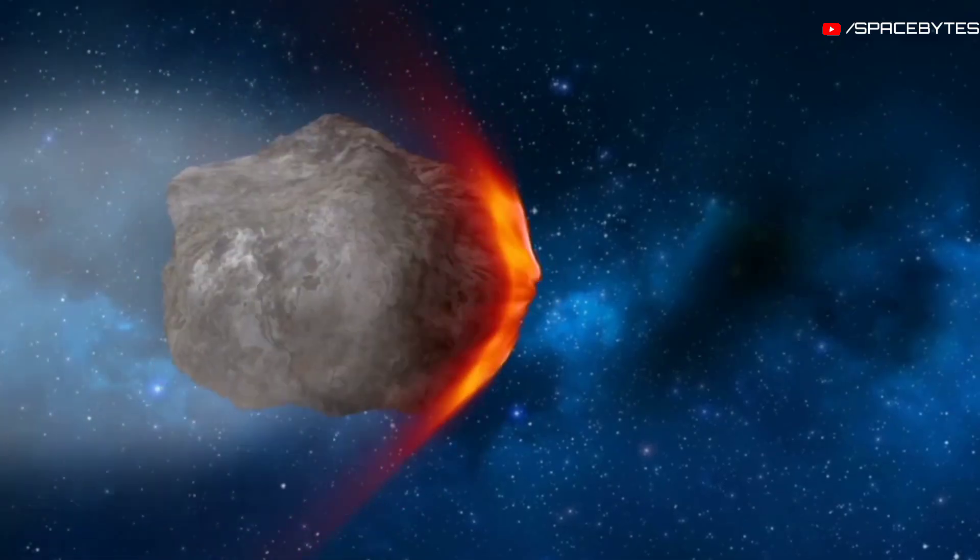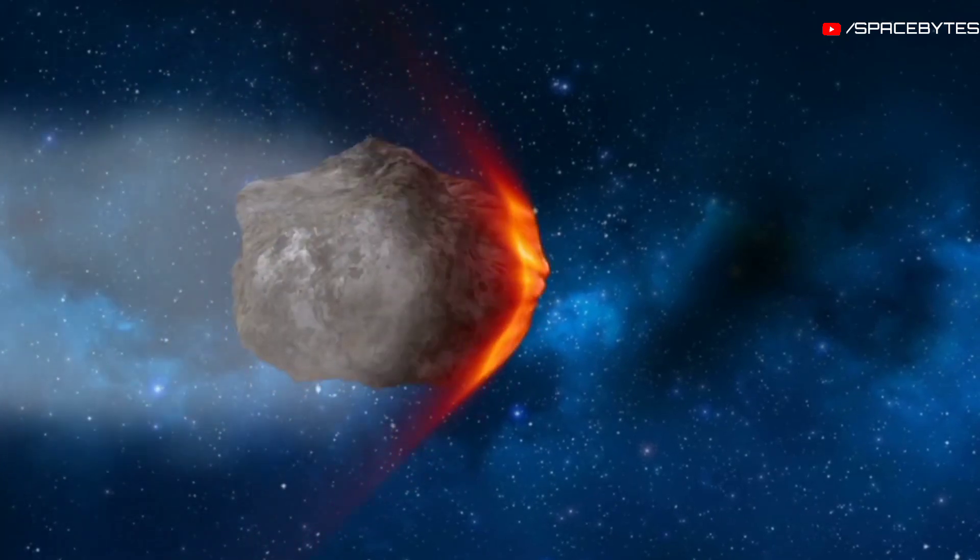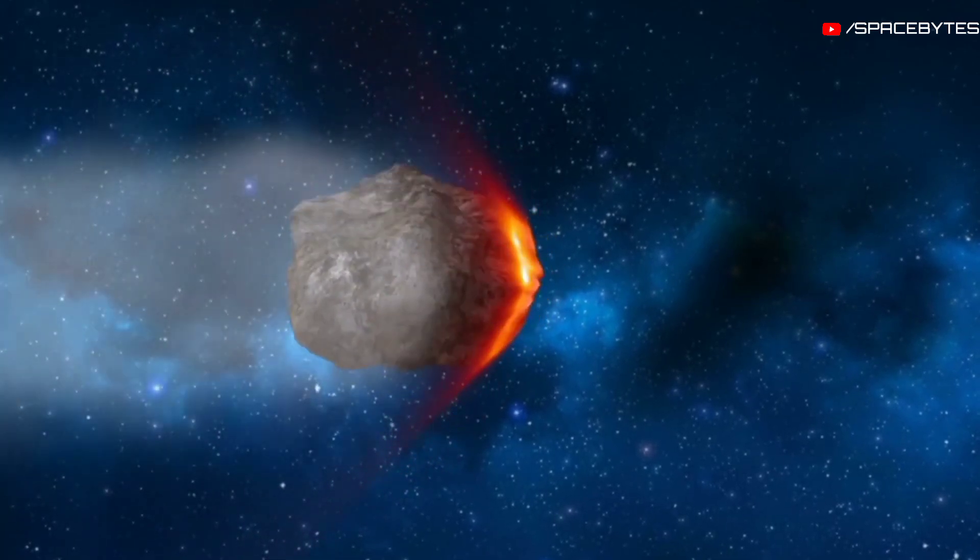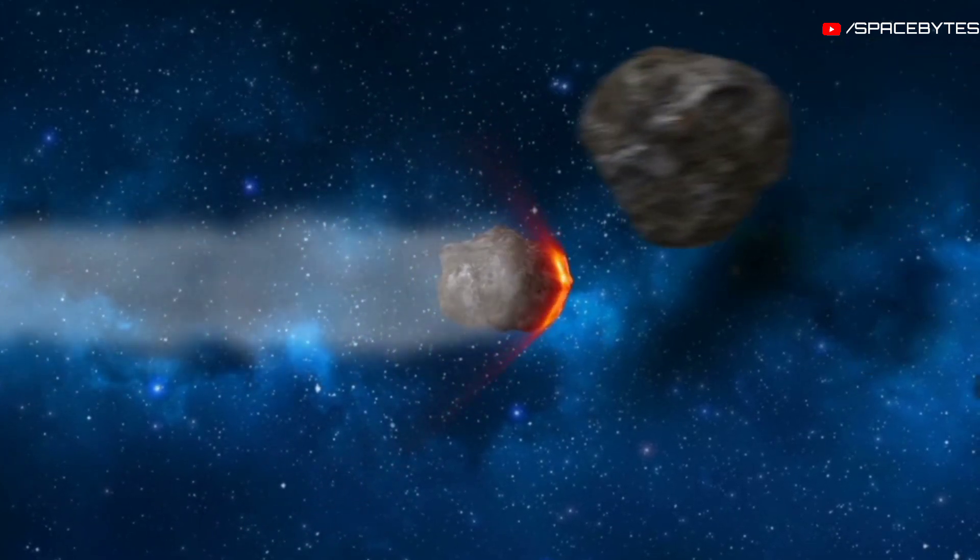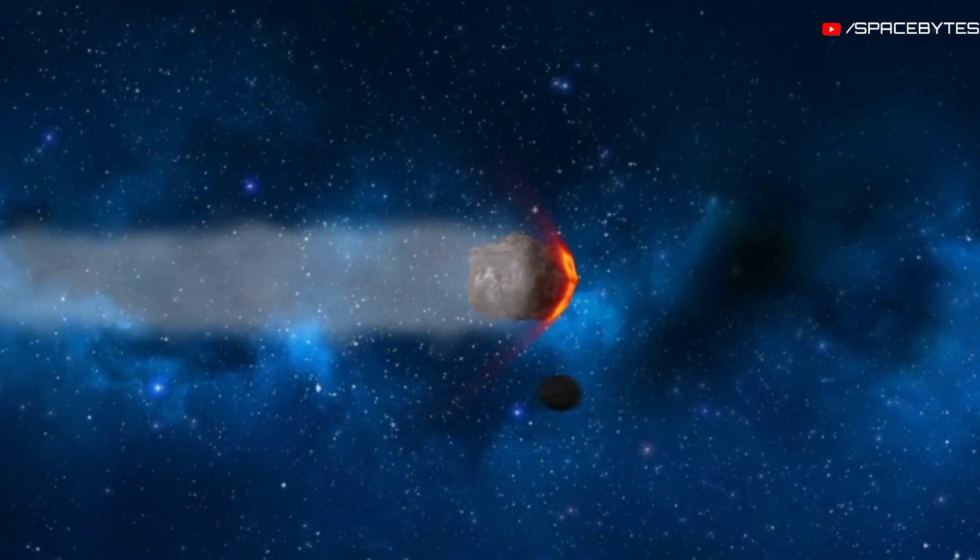The next close approach of asteroid 2020 QW3 to our planet will happen on August 23rd, 2024. On that day, its distance to Earth will be 10.71 million kilometers.